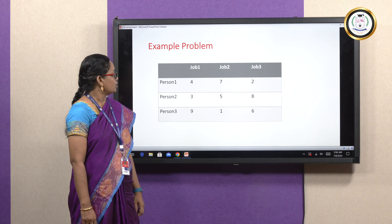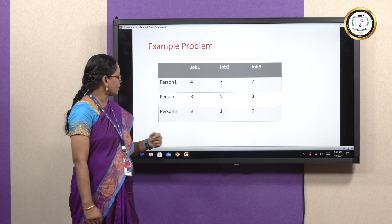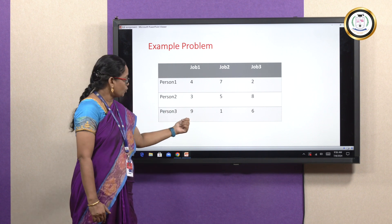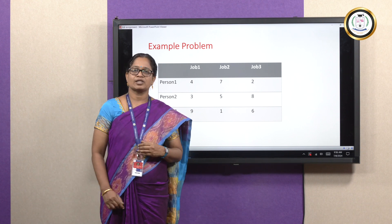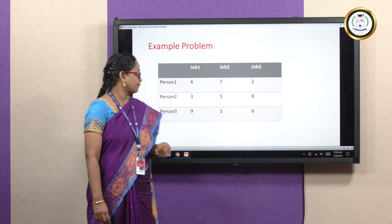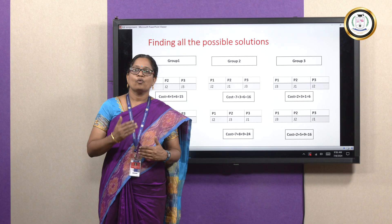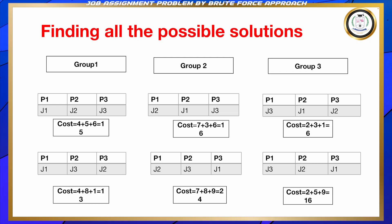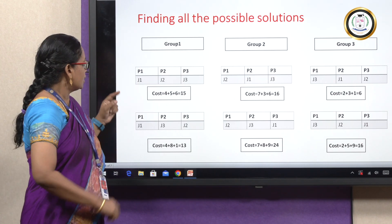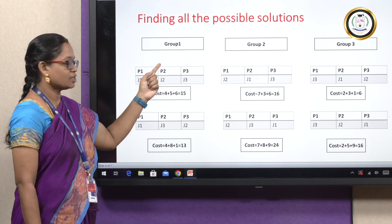When job 1 is assigned to person 1, the cost incurred is 4. When job 2 is assigned to person 1, the cost incurred is 7. Similarly, when job 1 is assigned to person 3, the cost associated with it is 9. Now we are going to solve this job assignment problem by brute force approach. First, we are listing all the possible job assignments, then splitting into groups, and finally finding the optimal solution. So what are the different job assignments possible? Job 1 assigned to person 1, job 2 to person 2, and job 3 to person 3.